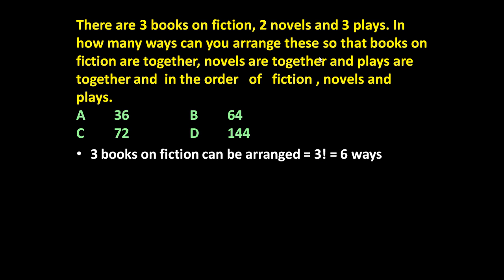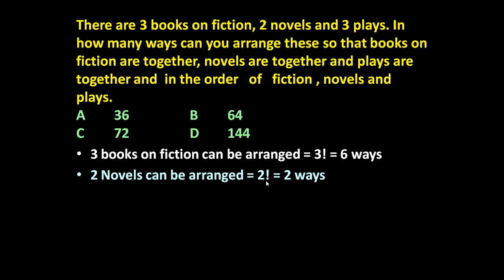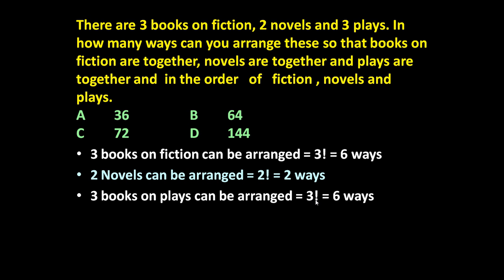After fiction there are two novels. These two novels can be arranged in factorial two ways. Factorial two means two into one, which is equal to two ways. And again three plays — these three plays can be arranged in factorial three, equal to six ways. So three books in six ways, two novels in two ways, and three plays in six ways.